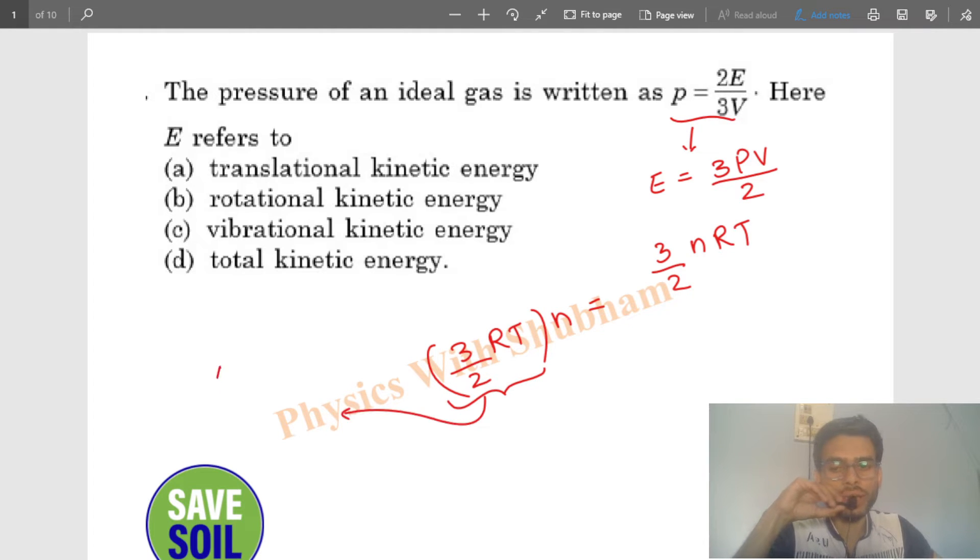This is nothing but average translational kinetic energy per mole, right? Average translational kinetic energy per mole ka jo formula hai, that is 3/2 RT. So if you multiply it with number of moles n - small n represents number of moles - so if you multiply per mole with number of moles, then you